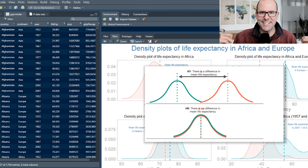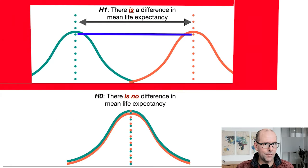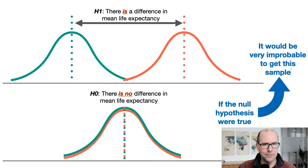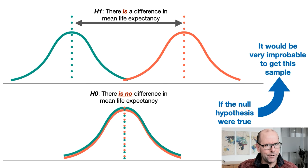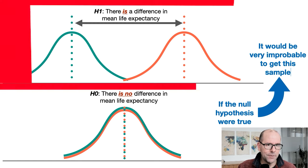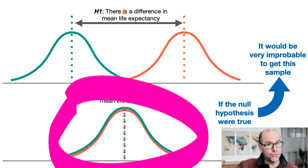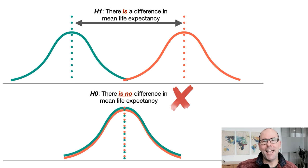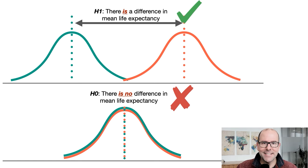This is how hypothesis testing works. We assume the opposite — the counterfactual, the null hypothesis — that there's no difference in means between these two populations. If that were true, how likely would it be that we would get a sample showing a difference as large as what we're seeing, or greater? If we find that very improbable — and we decide upfront what threshold we consider 'very improbable,' often 5% — then we can reject the null hypothesis and accept the fact that there is in fact a difference, and that our sample data is statistically significant.